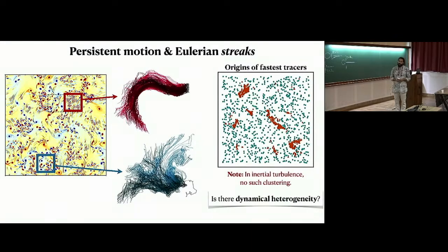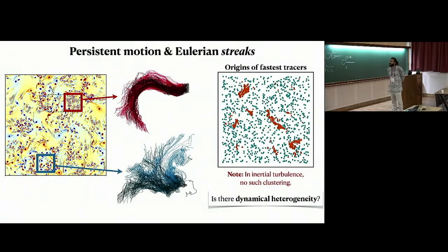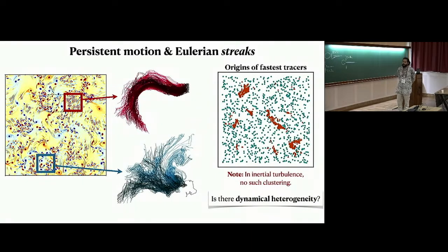Q: You're saying this is something like a glassy state — as you increase the activity, the dynamical heterogeneity means the system can actually melt. Do you see that? A: In some sense, yes. People have studied melting of vortex crystals and glassy states in this model, but they didn't look at dynamical heterogeneity specifically. There could also be melting states where this is happening.